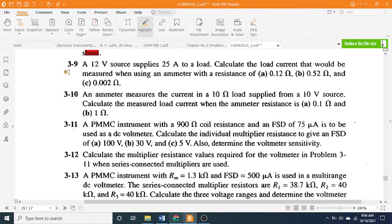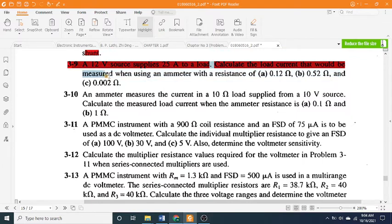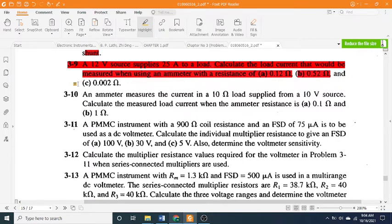3-9: A 12 V source supplies 25 A to a load. Calculate the load current that would be measured when using an ammeter with a resistance of (a) 0.12 Ω, (b) 0.52 Ω, and (c) 0.002 Ω.